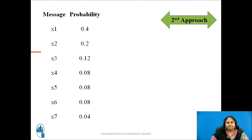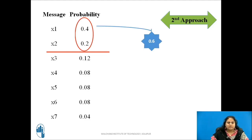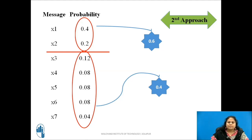Consider the second approach. The first partition can be applied after message x2. The sum of probabilities of the upper message subset is 0.6 and the sum of probabilities of the lower message subset is 0.4. In both cases, the difference between the sum of probabilities of two subsets is the same, i.e., 0.2. That means both approaches are correct as per the rule. Thus, there is ambiguity about which one to select for coding.